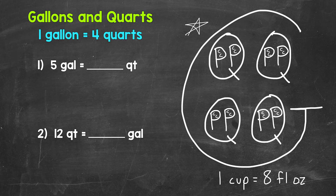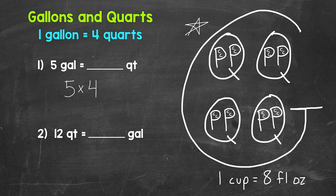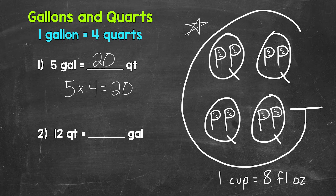Well, each gallon equals four quarts. So we have five groups of four quarts, meaning we need to do five times four — that's how we convert from gallons to quarts: we multiply by four. Five times four gives us 20, so five gallons equals 20 quarts. When going from gallons to quarts, multiply by four.